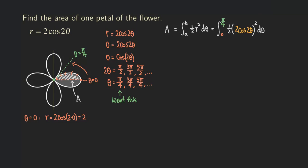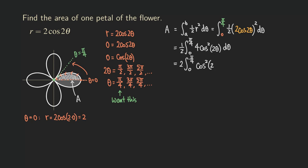Going from here, we can move the one half outside and square the expression. So we have 1 over 2, integral from 0 to pi over 4 of 4 cosine squared 2 theta. We can move the 4 outside and multiply it with the one half to get 2. So we have 2 times the integral from 0 to pi over 4 of cosine squared 2 theta.